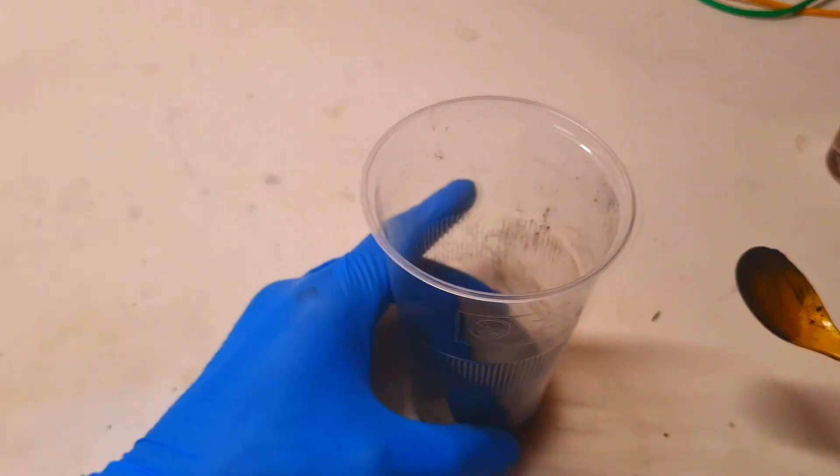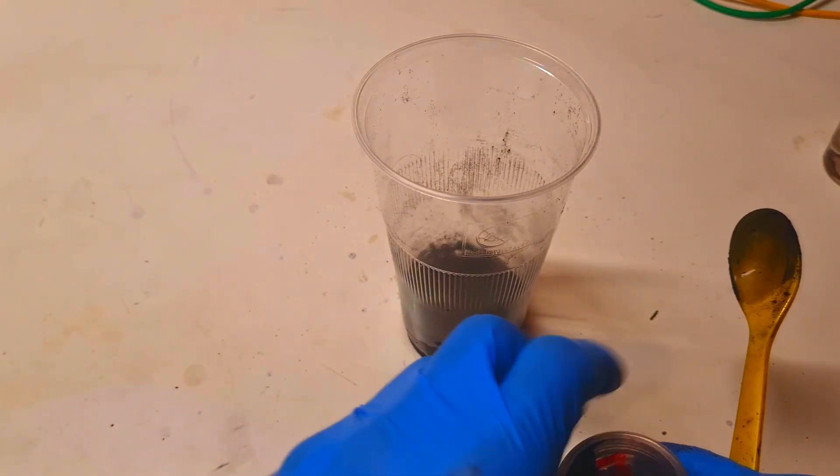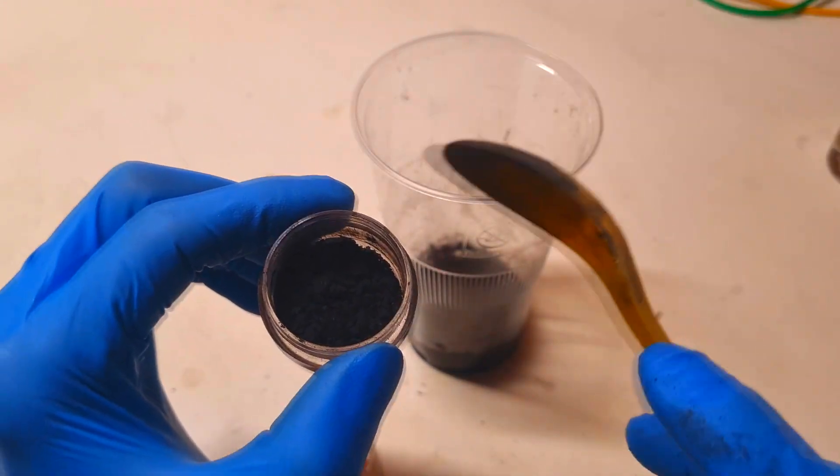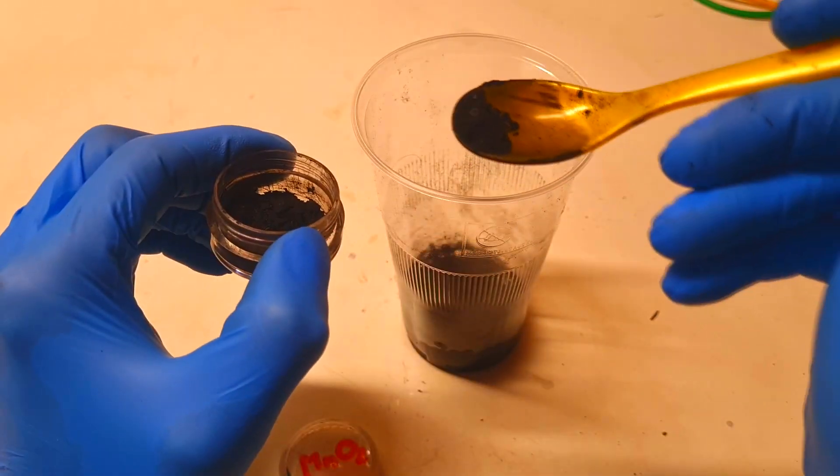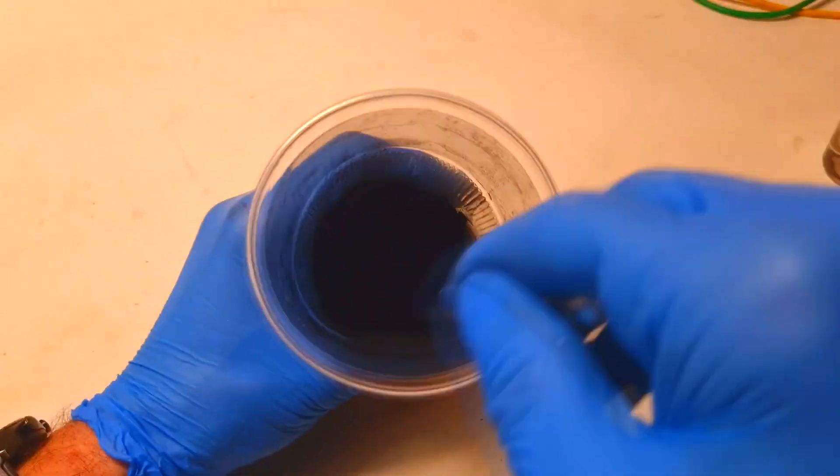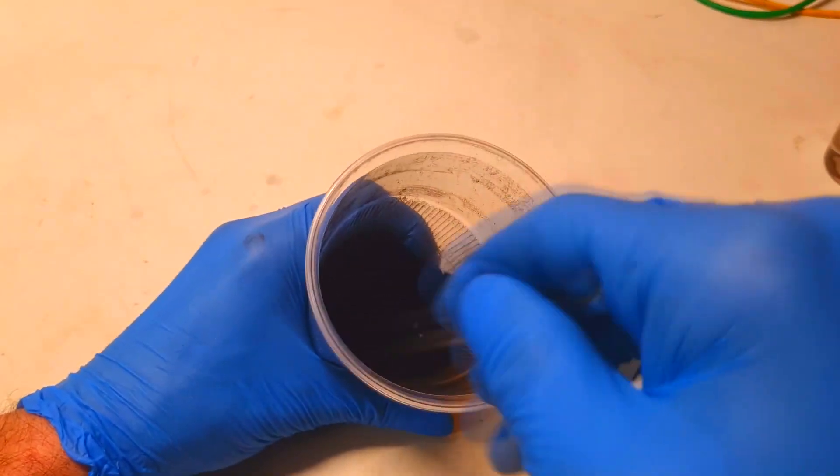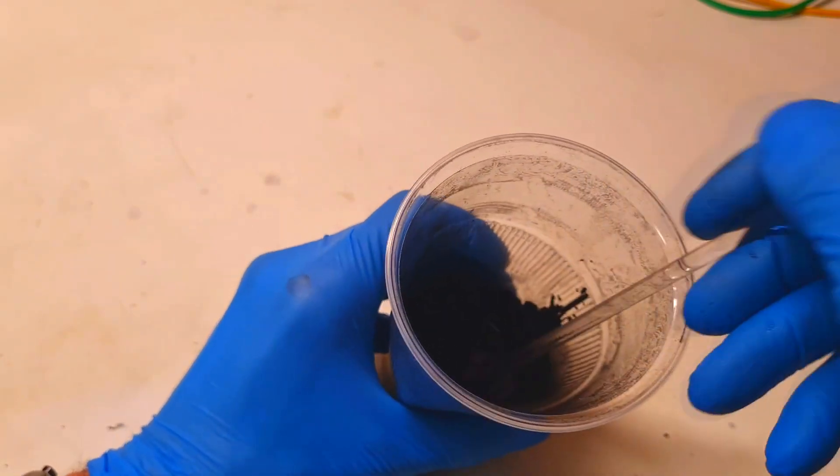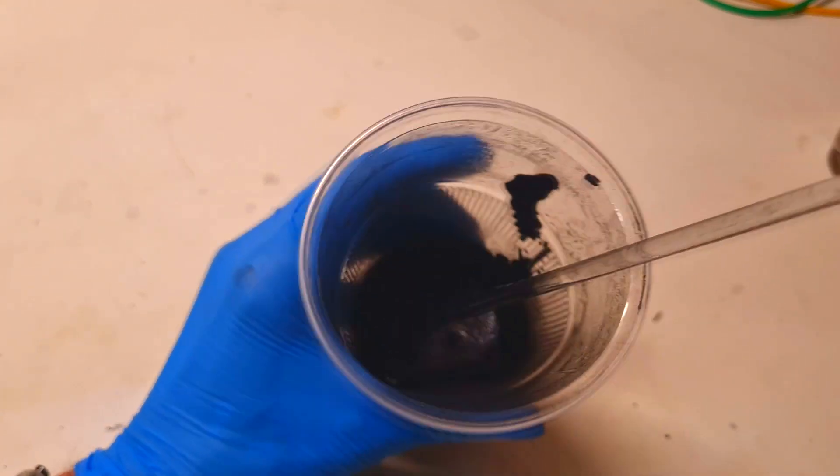And to boost the performance a little bit, I will also add a little bit of manganese dioxide. So here I have a mix of manganese dioxide and carbon black. Just a little bit, this will be enough. And after mixing I get something like this. Really nice. So the cathode is ready.